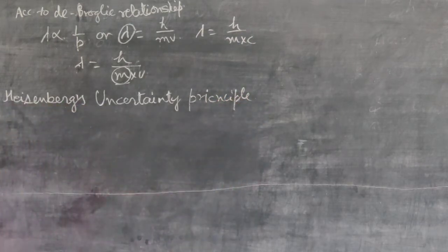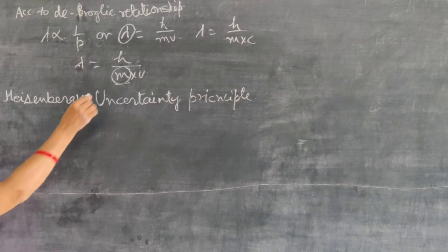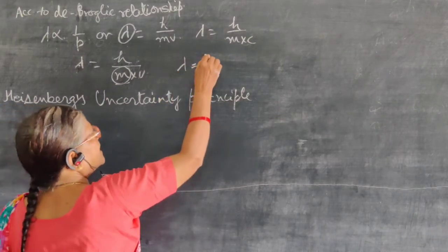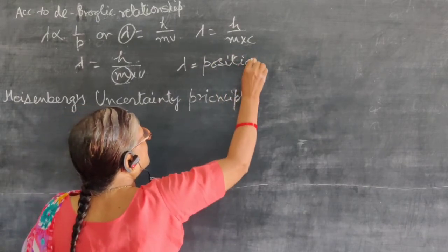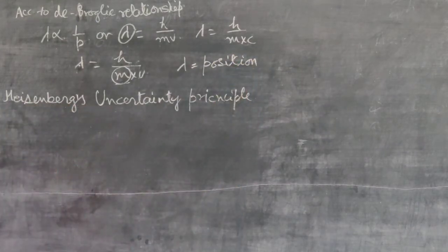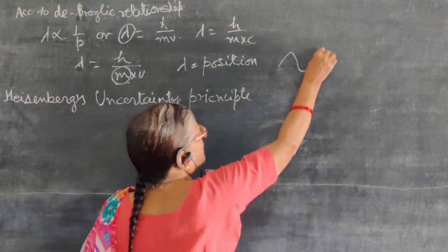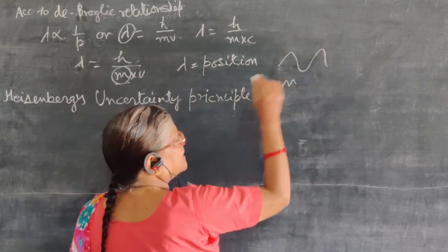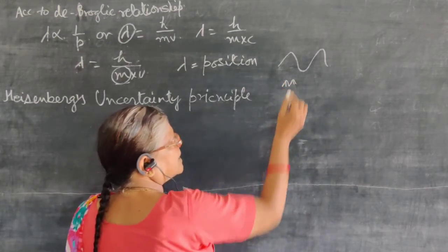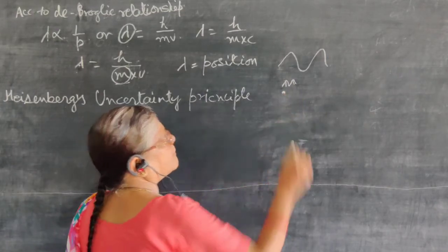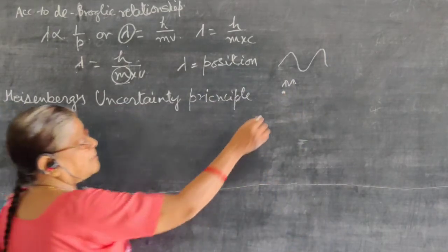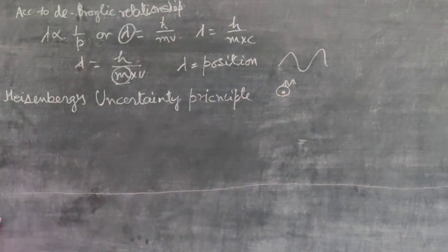According to this principle, for subatomic particles which have insignificant mass, there are two properties: lambda and velocity. Lambda represents the position here, because lambda is a wavelength. When we minimize the wavelength, it becomes smaller and smaller until you get one point. When you make the wavelength that small, the particle will not behave like a wave - it will be localized and have particle behavior.